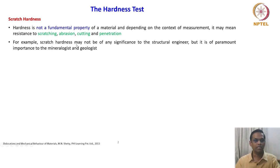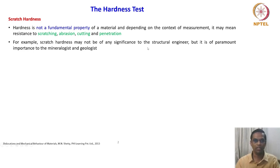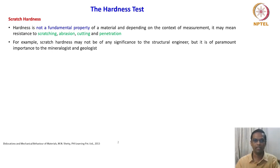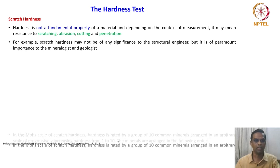For example, scratch hardness may not be of any significance to a structural engineer, but it is of paramount importance to a mineralogist and geologist. A structural engineer will not get enough information about the material through scratch hardness, because for a structural engineer, strength and toughness are the primary important properties. On the other hand, people like mineralogists and geologists will find very interesting data from scratch hardness. So this is fundamental hardness — let us see what it is.